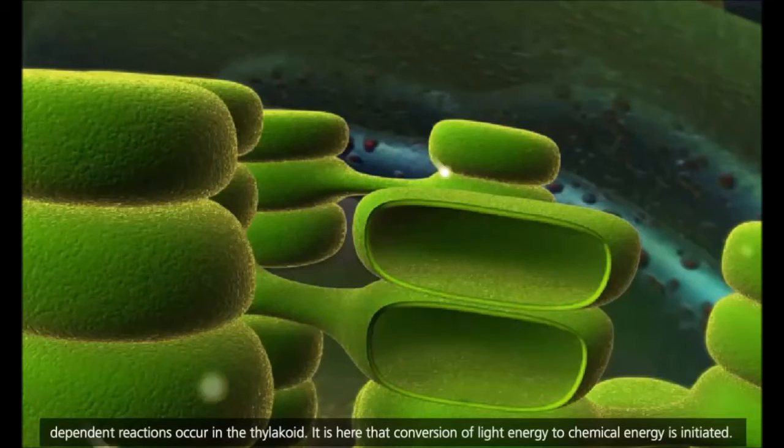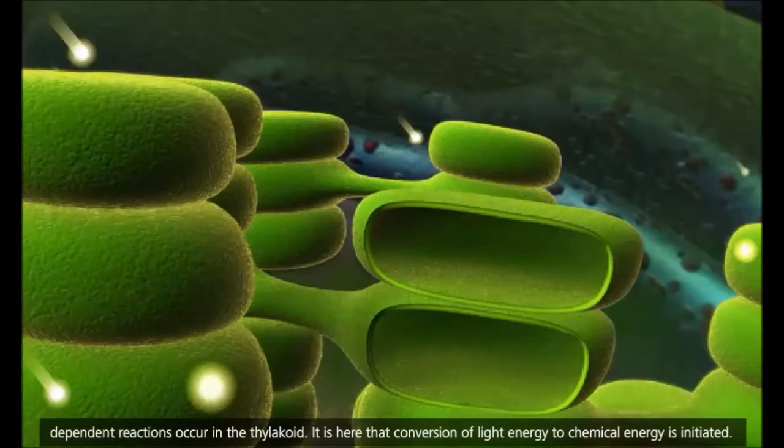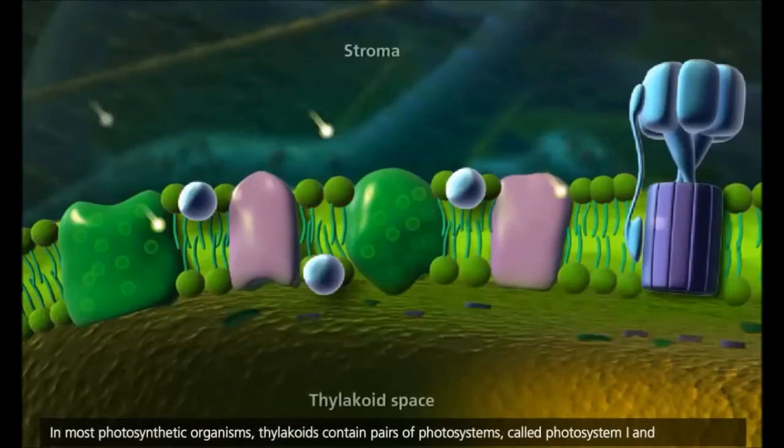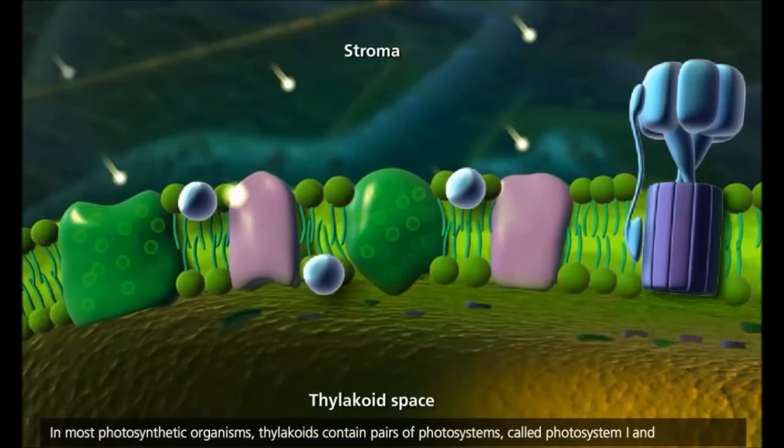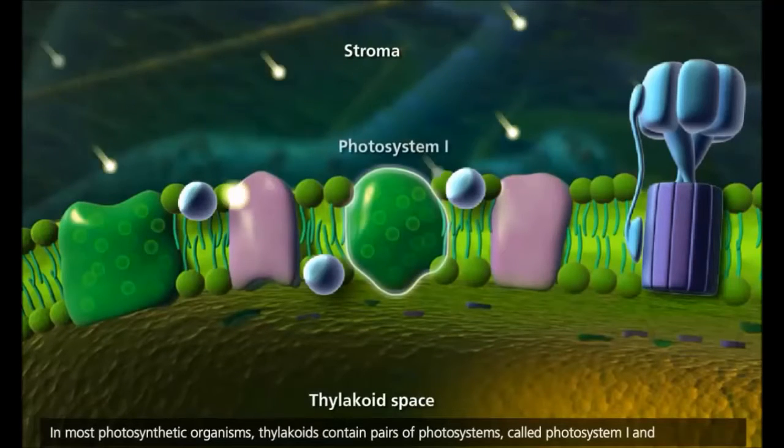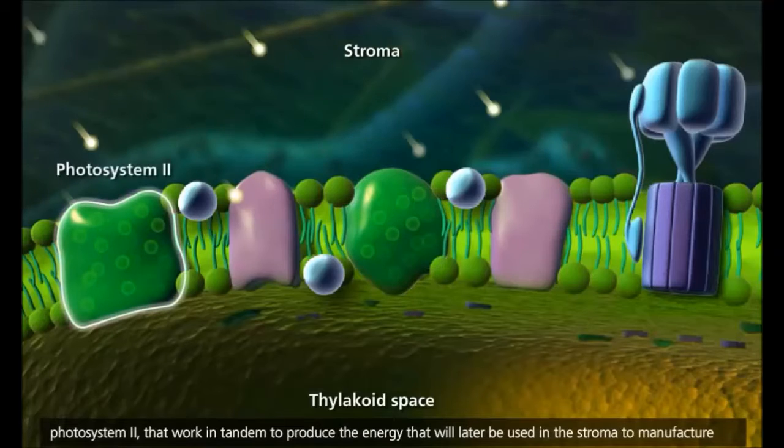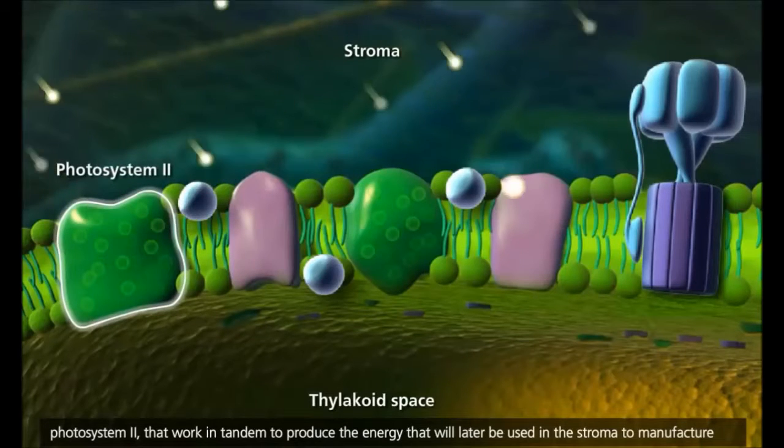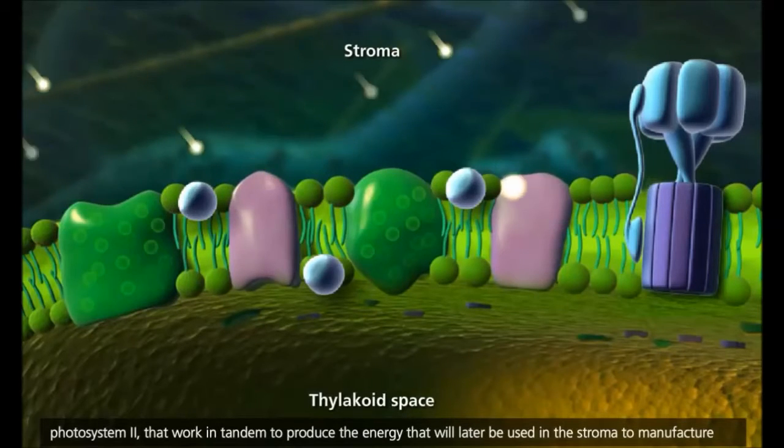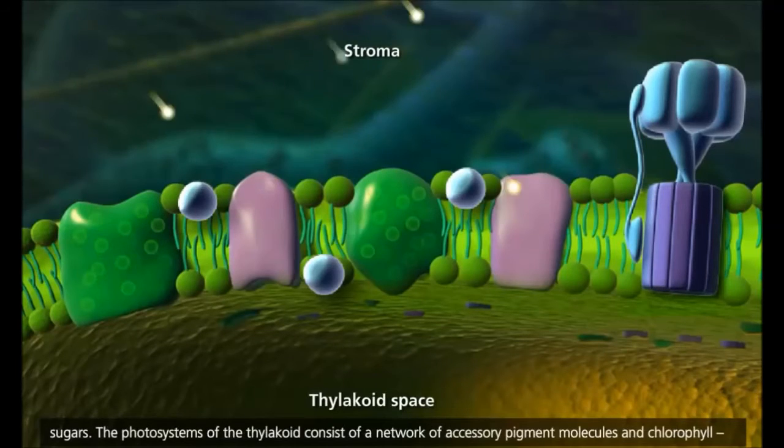It is here that conversion of light energy to chemical energy is initiated. In most photosynthetic organisms, thylakoids contain pairs of photosystems, called photosystem I and photosystem II, that work in tandem to produce the energy that will later be used in the stroma to manufacture sugars.